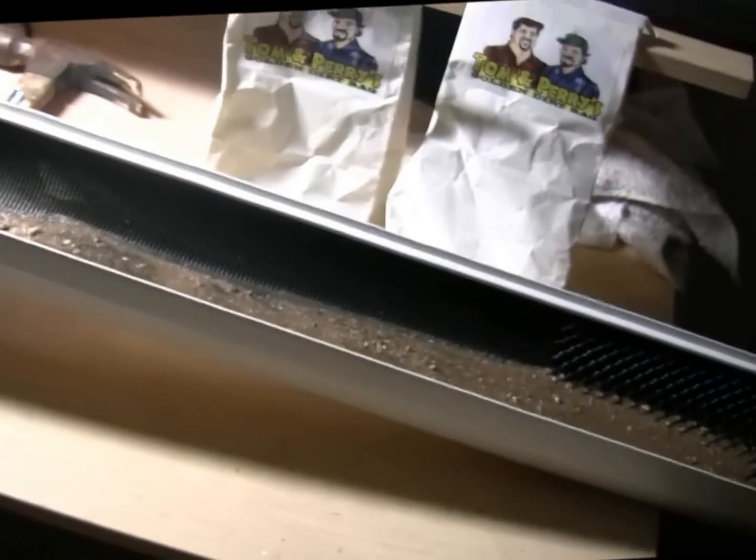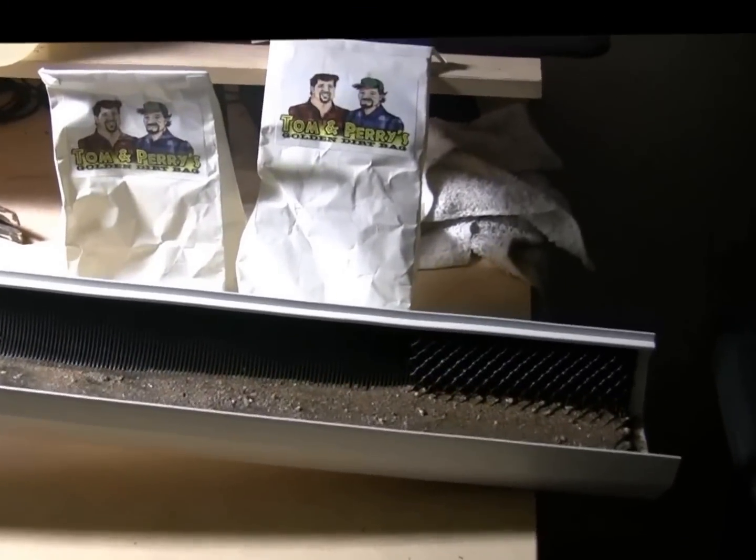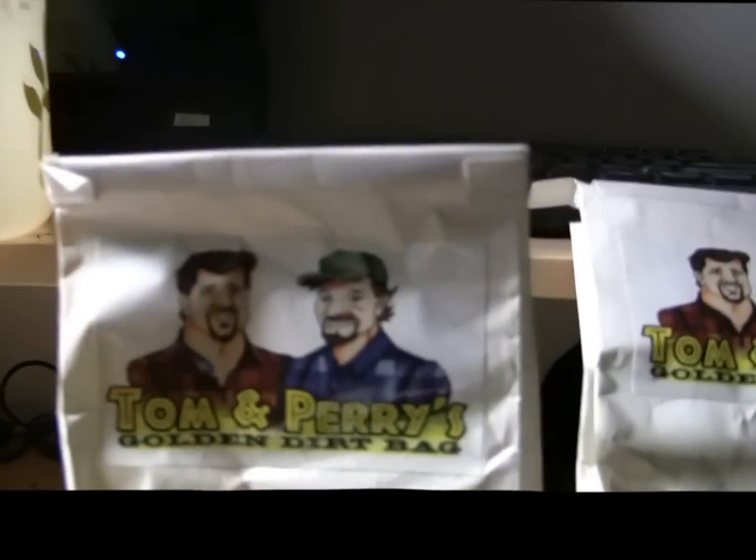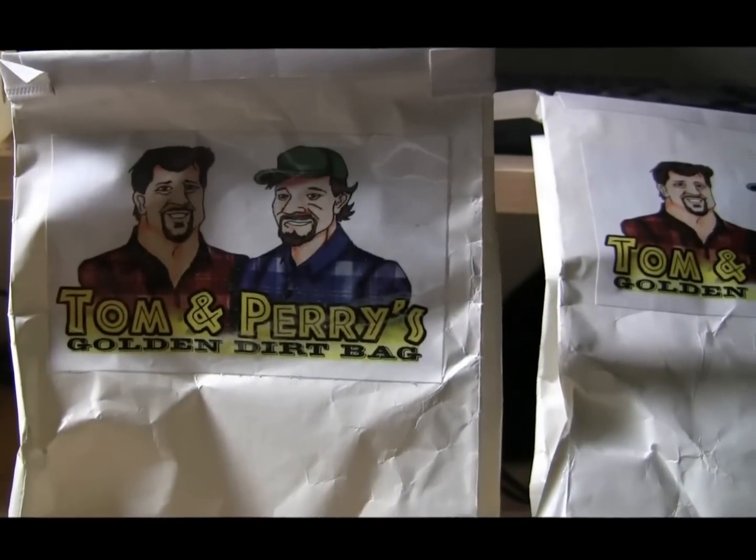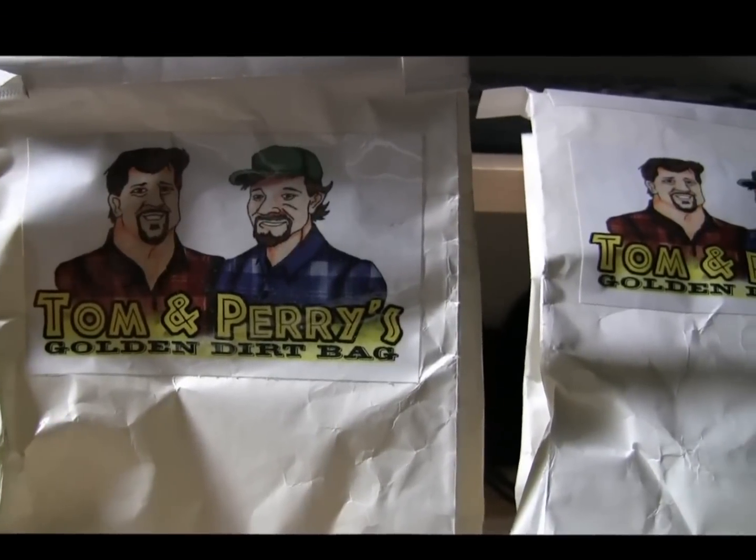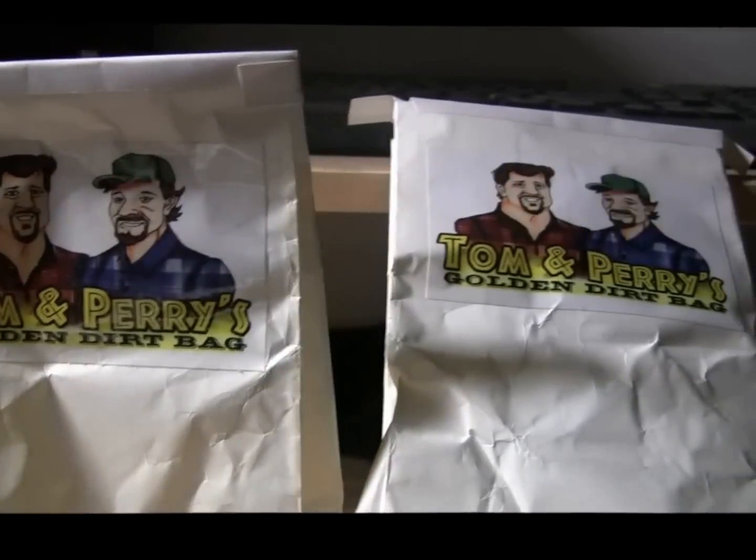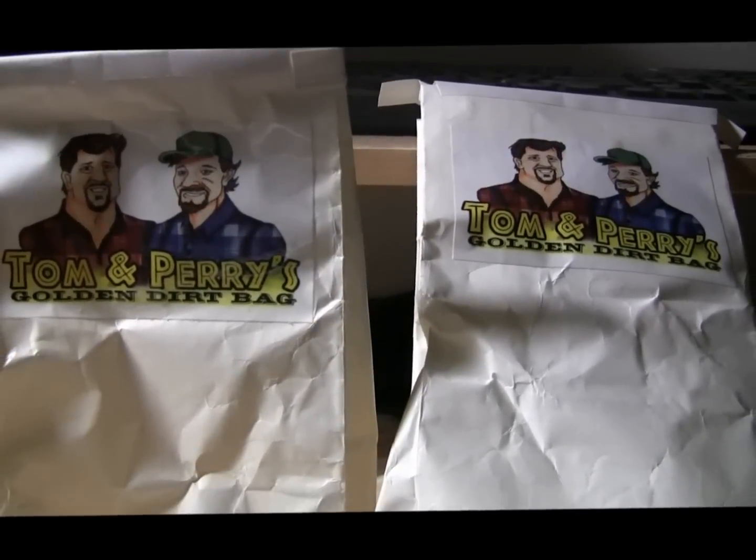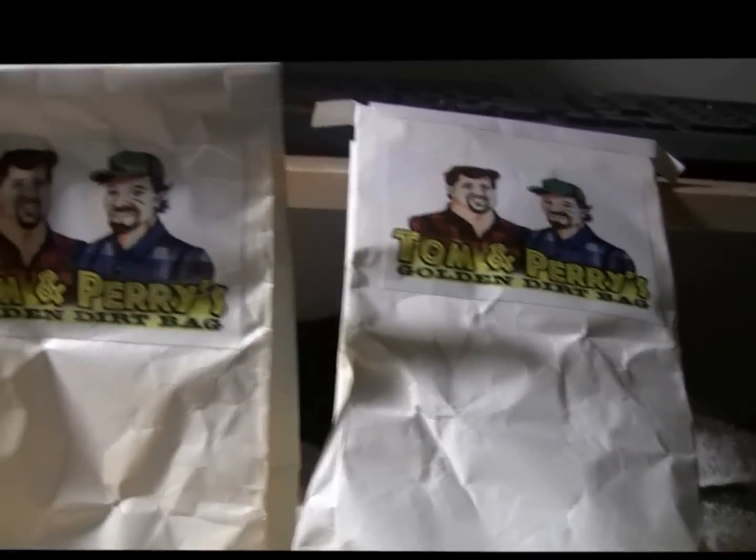And so this is from a place called Tom and Perry's I found online. I also bought with this package, they give you a little bit of soil, it's just a little tiny bag of soil, but they say it's guaranteed to have gold in it. So I don't know if they probably salt it with a little bit or something, but these guys are gold miners, it could just be, you know, who knows, I don't know what they got, but it's just a little bit of soil.